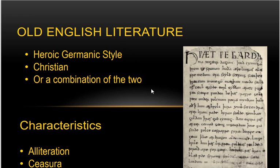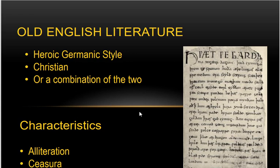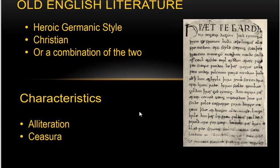All Old English literature mainly focuses on two aspects: one is heroic deeds or heroic style, and the other is Christianity or religion, or a combination of the two. The characteristics of ancient Old English literature were alliteration and caesura — both literary terms. The caesura is a term used to mean a break or pause in the middle of a line in the metrical foot of a poetic verse.